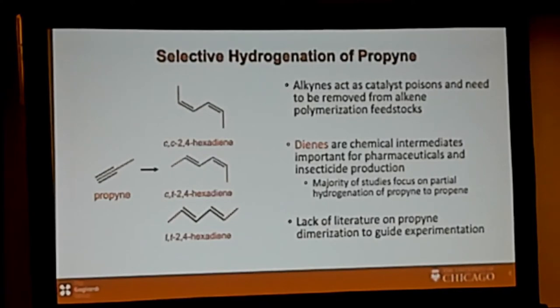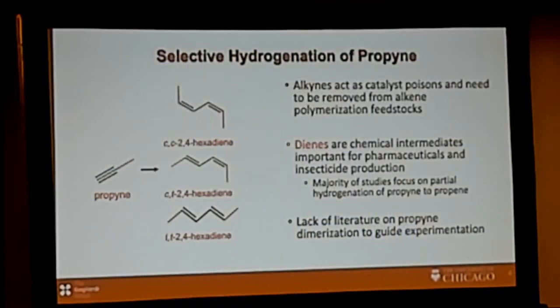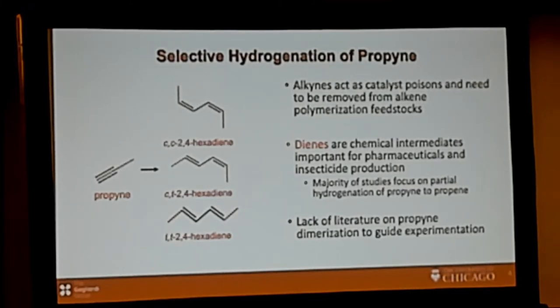Today I'm going to tell you a story about using these frameworks for the selective hydrogenation of propyne. I've chosen this example because it really shows how you can coordinate experiment, theory, computational modeling, and data science in a self-sustained way in which all aspects inform each other. Alkynes can be catalyst poisons and should be removed from alkane polymerization feedstocks. Dienes are chemical intermediates important for many applications, including pharmaceutical and insecticide production. There is some gap in the literature on propyne semi-hydrogenation, and so this is why we want to study this.